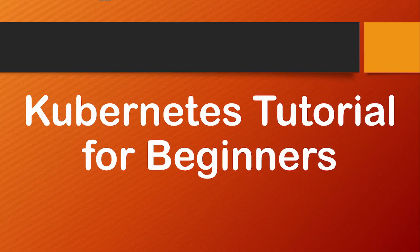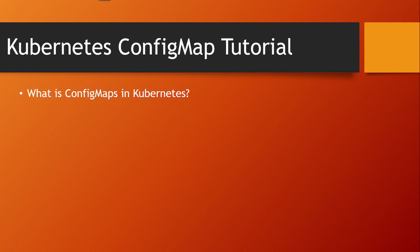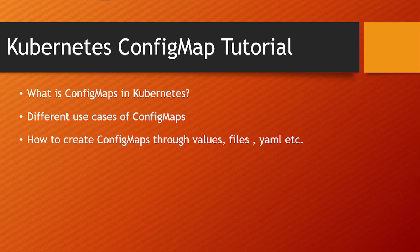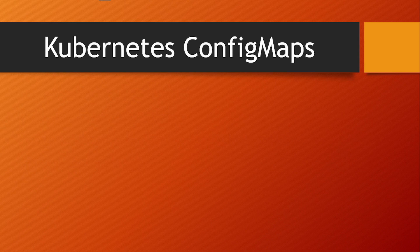Hello friends, welcome back to my channel. Today we are back with another tutorial on Kubernetes. In this tutorial for Kubernetes beginners, we are going to see about Kubernetes ConfigMaps — what they are, the different use cases, and how to create ConfigMaps through values, files, or a manifest file. We'll also see how to use ConfigMaps in pods. Let's get started.